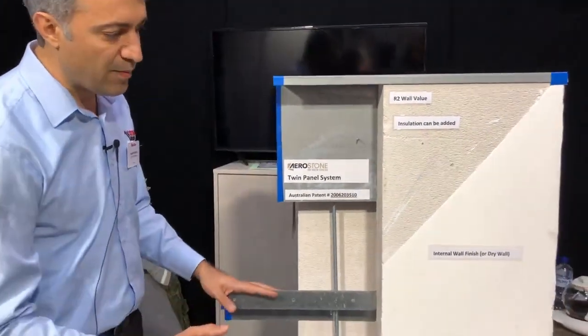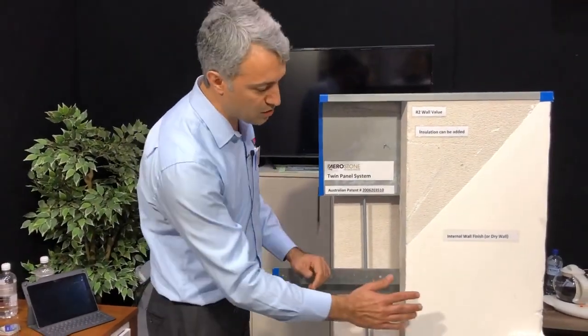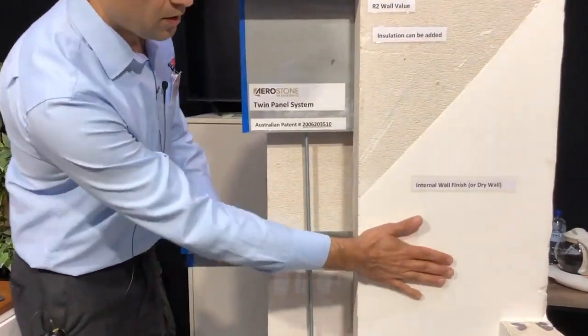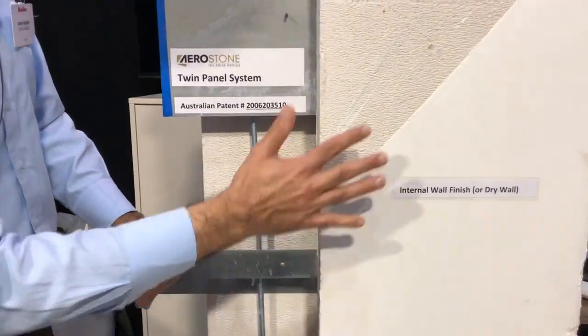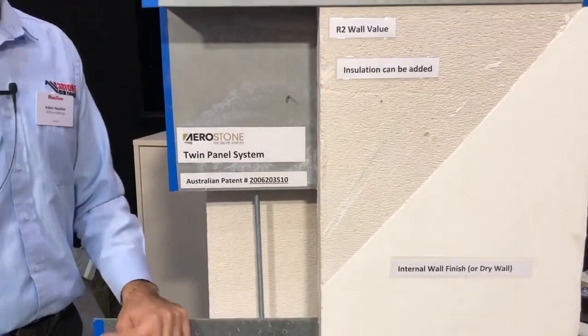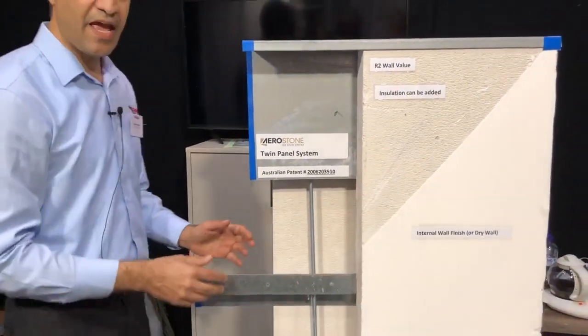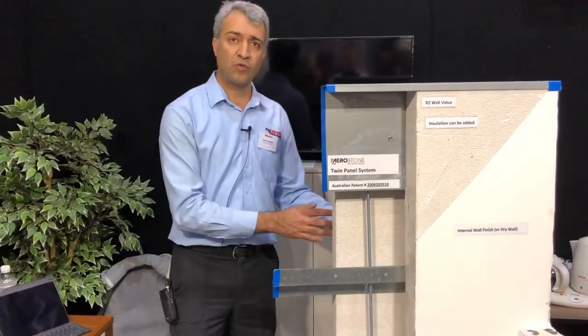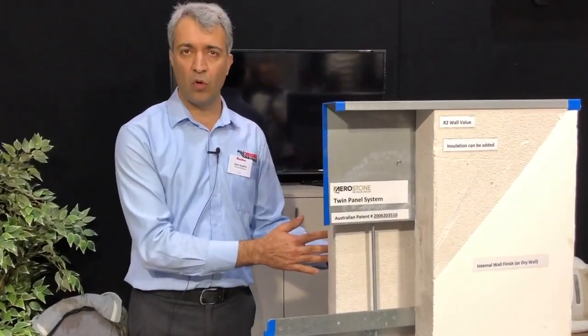Now this system has different finishes on the inside. You can have this normal smooth white finish or you can fix chip rock directly into the system. From the outside, you can have acrylic render or you can have roll-on paint.